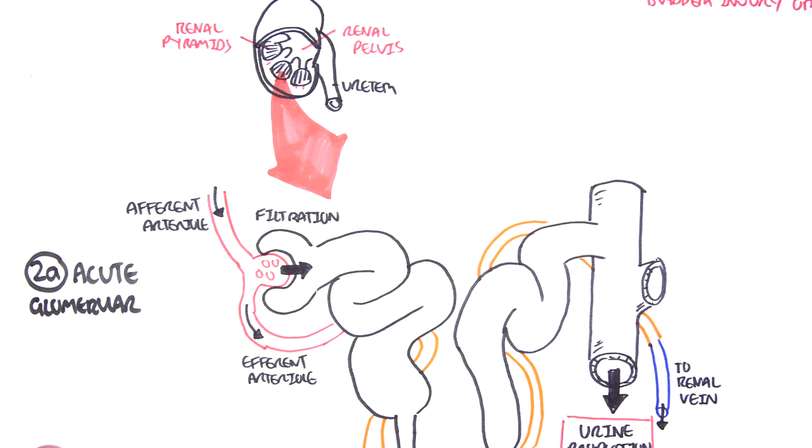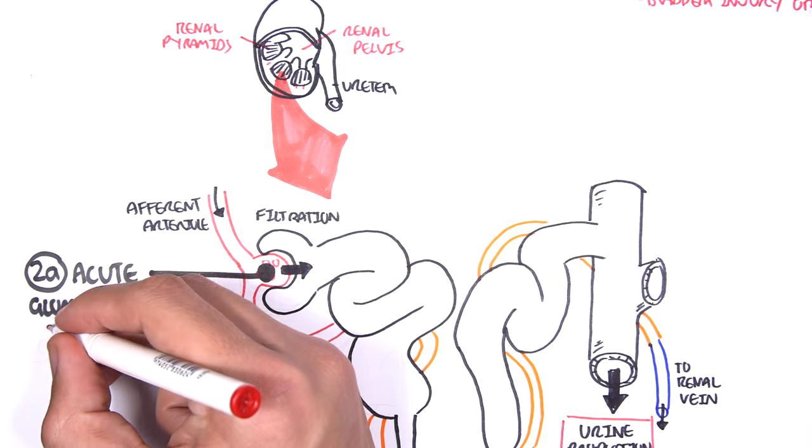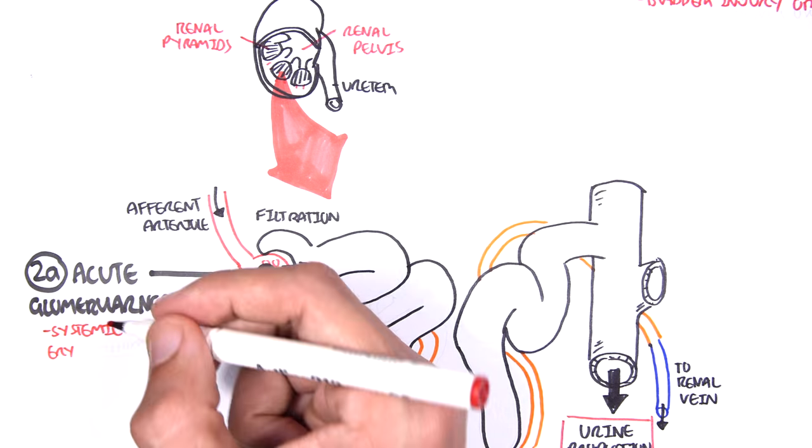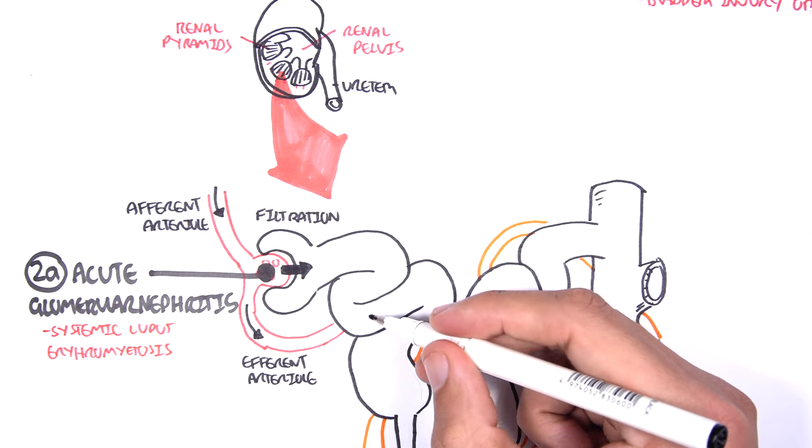We can have acute glomerulonephritis, and this is literally inflammation of the glomerulus. One of the main causes of acute glomerulonephritis is an autoimmune condition known as systemic lupus erythematosus.